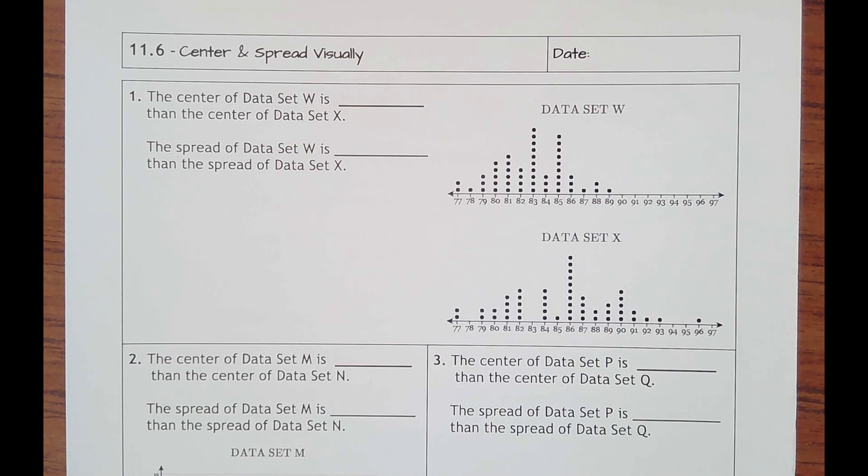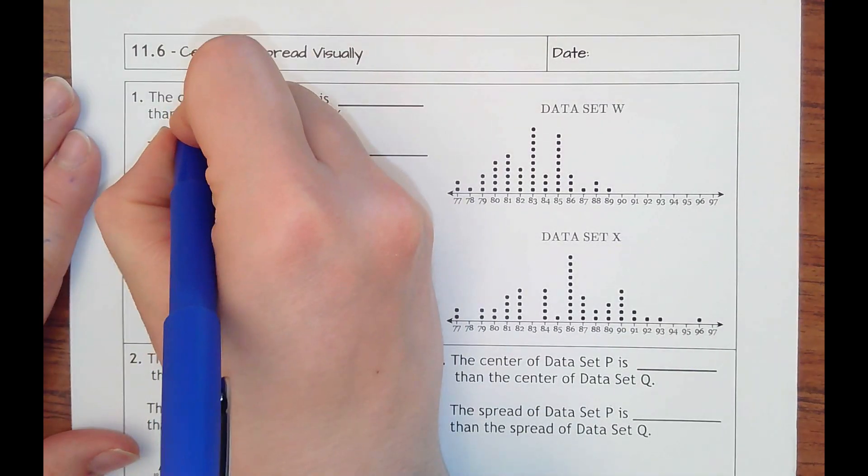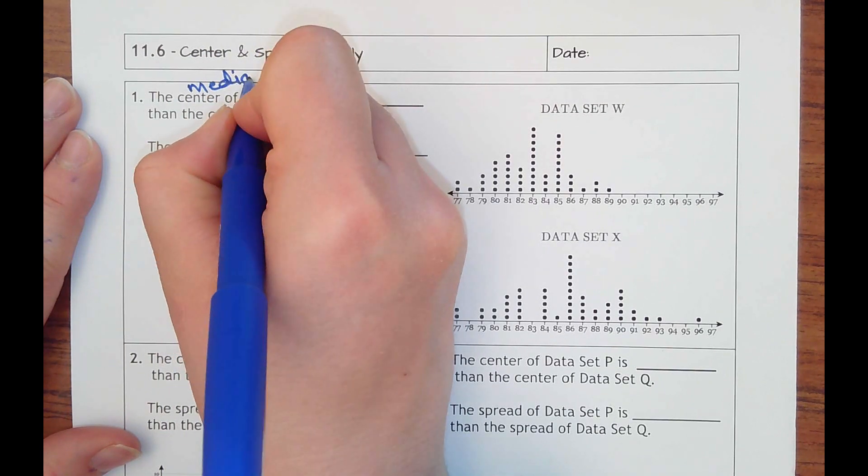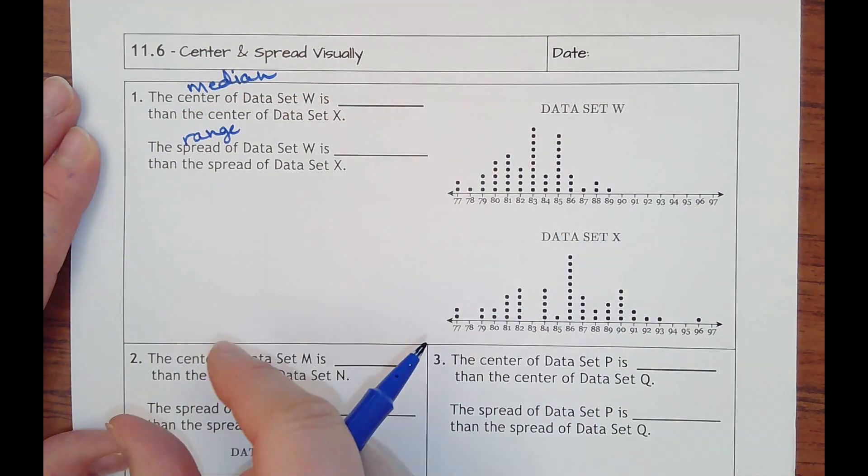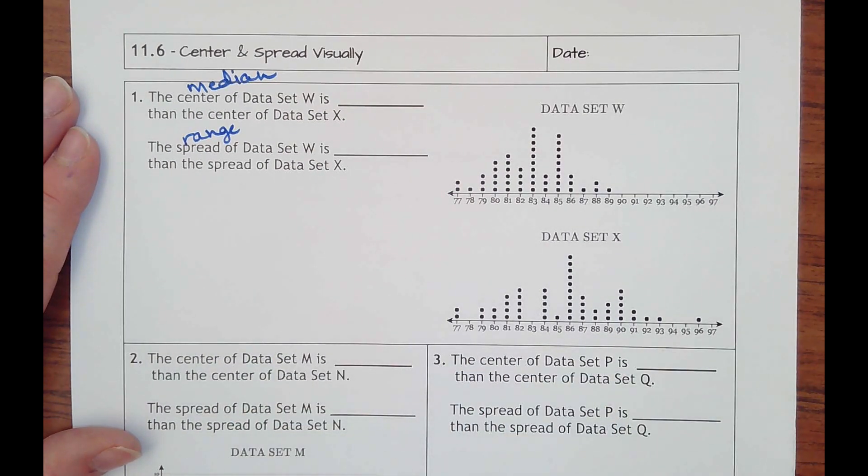11.6 is called center and spread visually. Center is really like a median, whereas spread is like a range. Kind of makes sense. A range is how far spread, how far or the max minus the min, what the difference is.